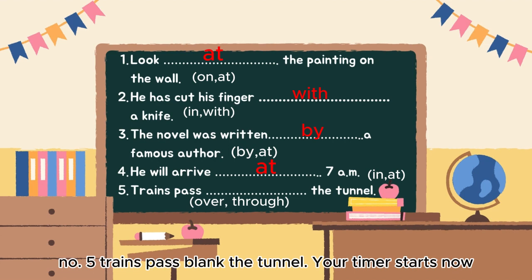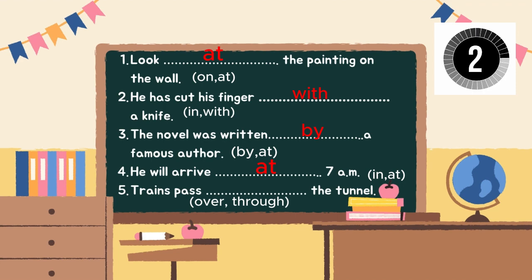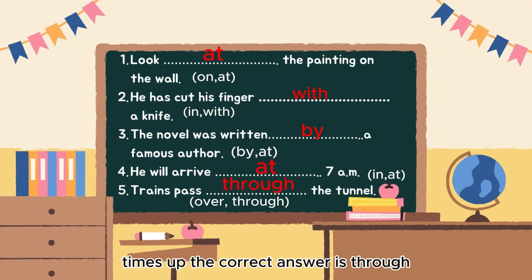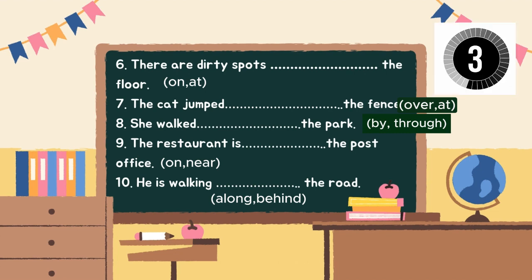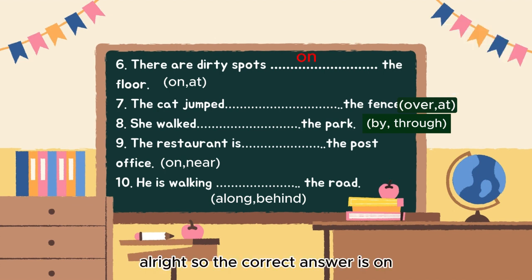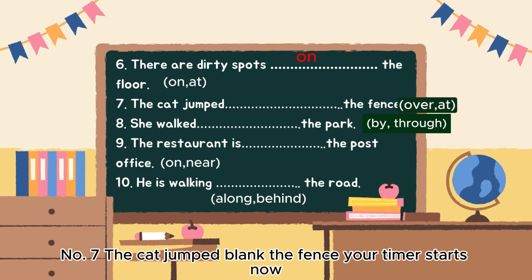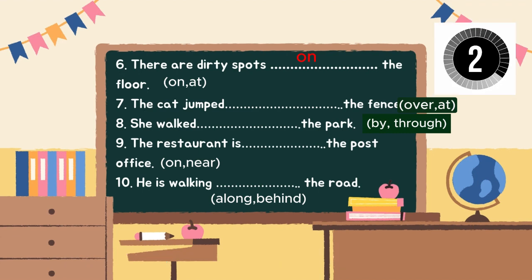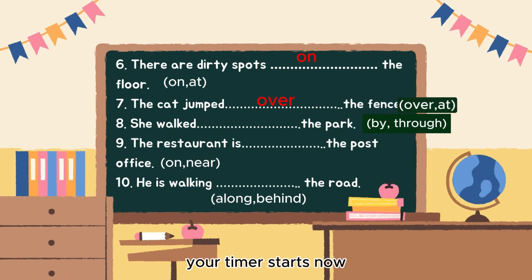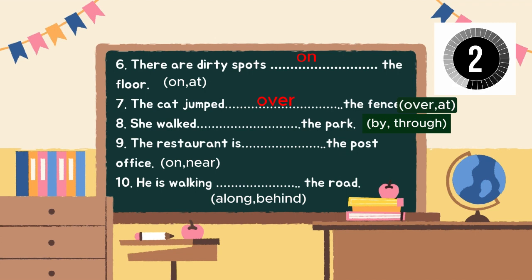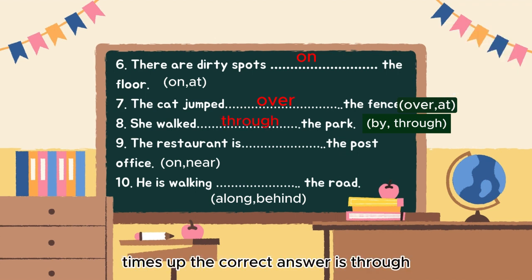Question 5: 'Trains pass ___ the tunnel.' The correct answer is 'through' — 'Trains pass through the tunnel.' Question 6: 'There are dirty spots ___ the floor.' The correct answer is 'on' — 'There are dirty spots on the floor.' Question 7: 'The cat jumped ___ the fence.' The correct answer is 'over' — 'The cat jumped over the fence.' Question 8: 'She walked ___ the park.' The correct answer is 'through' — 'She walked through the park.'